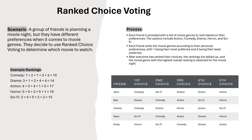Let's take the example of rank choice voting. Scenario: a group of friends is planning a movie night but they have different preferences when it comes to movie genres. They decided to use rank choice voting to determine which movie to watch. The process: each friend is provided with a list of movie genres to rank based on their preferences. The options are action, comedy, drama, horror, and sci-fi. Each friend ranks the genres with 1 being their most preferred and 5 being their least preferred. After everyone has ranked their choices, the rankings are tallied and the movie genre with the highest overall ranking is selected.